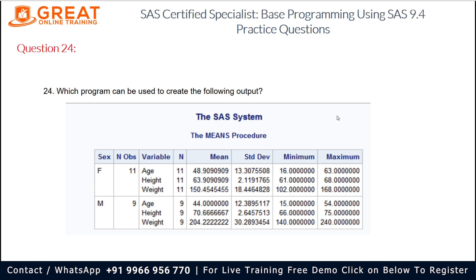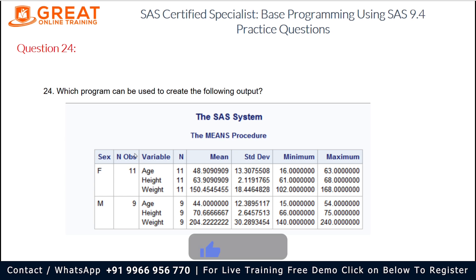Question number 24 is: which program can be used to create the following output? The SAS System — the MEANS procedure. By clearly seeing the output we can say that it belongs to the MEANS concept. Looking at the table, we can see the variable called SEX which has females and males — females are 11 and males are 9.